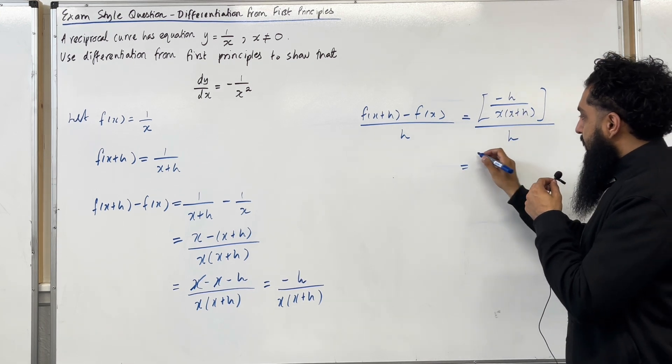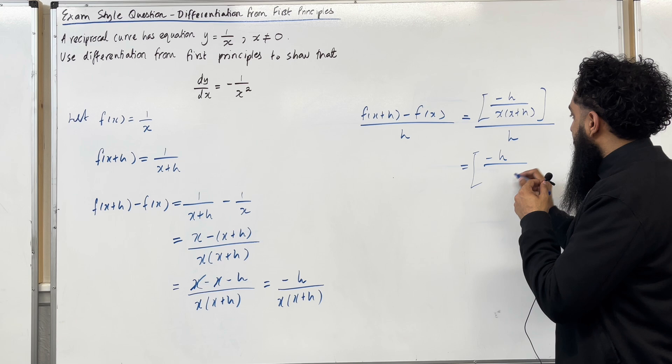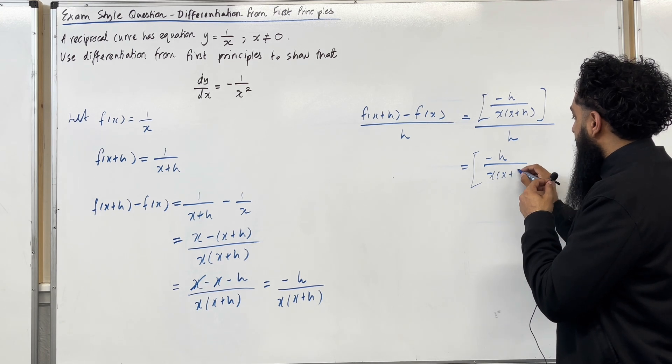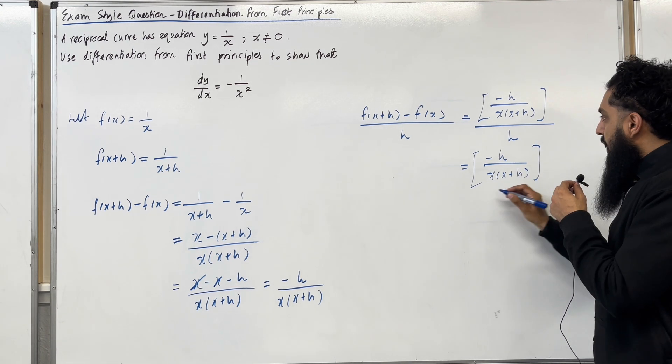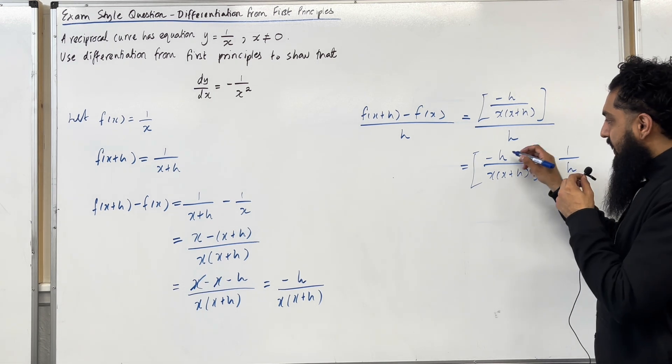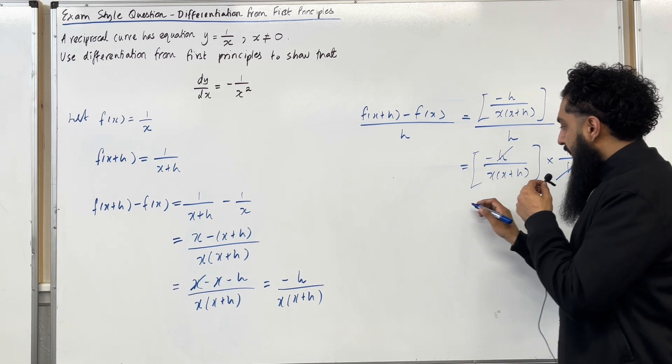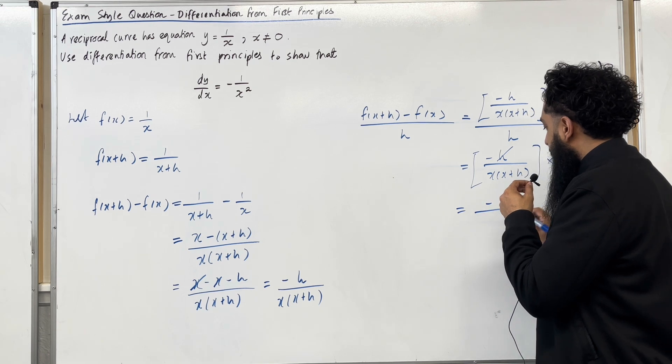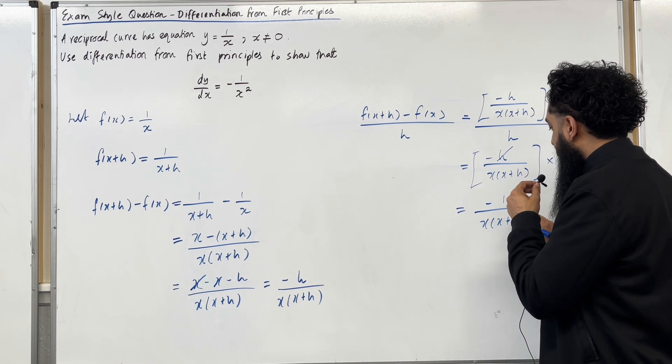I can rewrite this as minus h over x lots of x plus h, this whole thing multiplied by 1 over h. Notice that the h's cancel out, leaving me with minus 1 over x lots of x plus h.